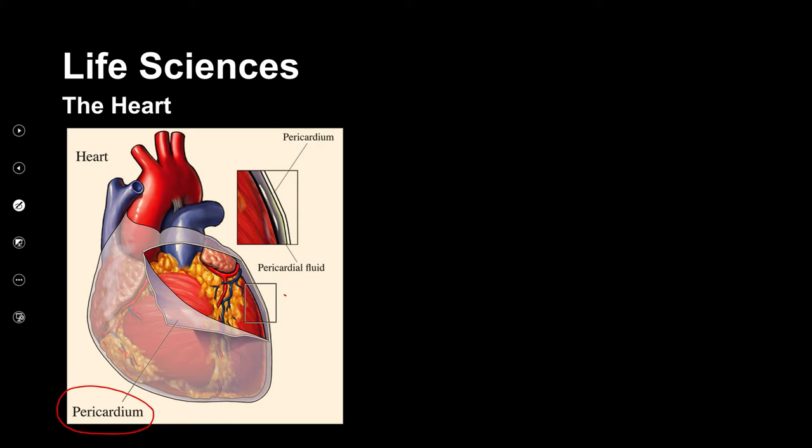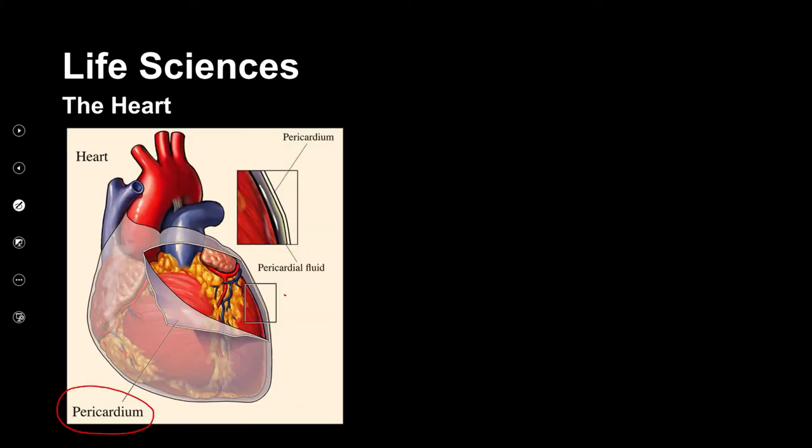The heart is in a sac — why is it in the sac? Because the heart is going to beat, it moves. When it moves, you don't want it to create friction or knock into anything. You want it to be in its own little place, and all that it does is contract and relax. That little cover makes sure that the movement is nice and smooth and that it's protected and lubricated because there's going to be a little bit of fluid there for lubrication — to protect it from friction.